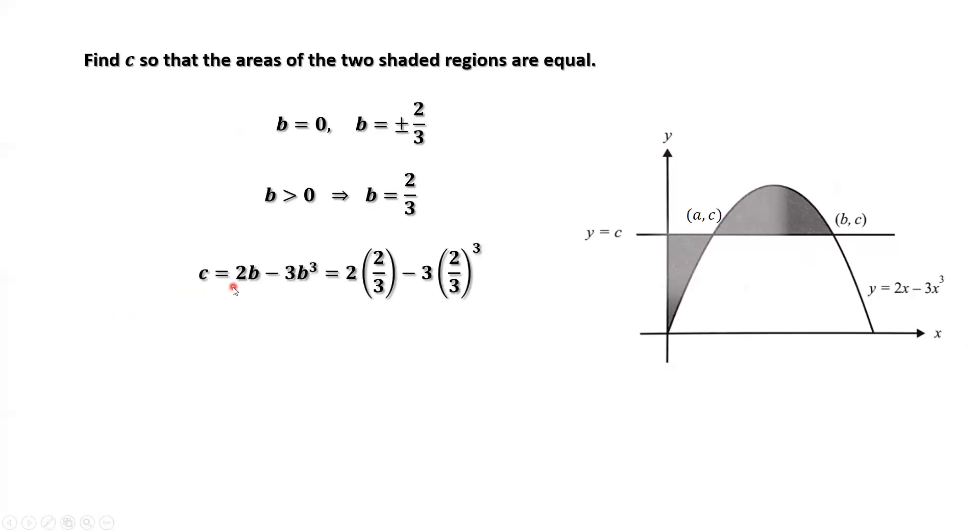Because c equals 2b minus 3b to the power of 3, we replace b by 2 over 3. Then we have this result. Simplify the right-hand side. Then we have c equals 4 over 9.